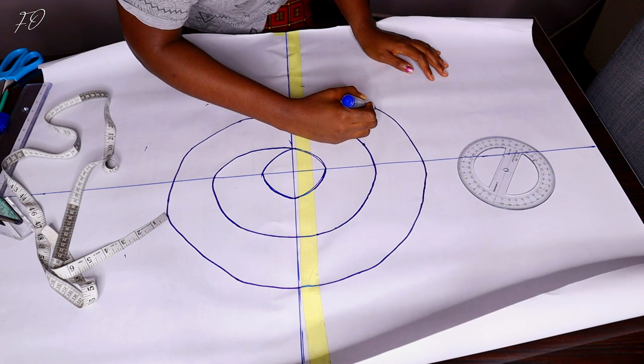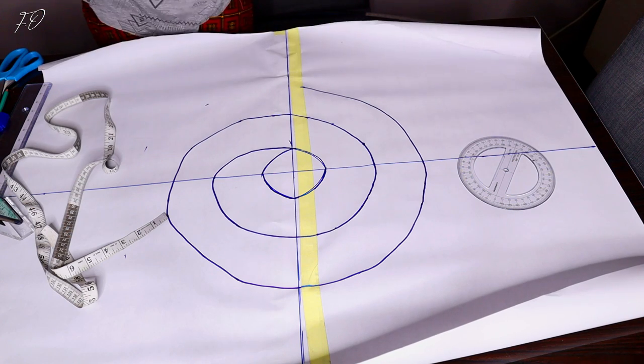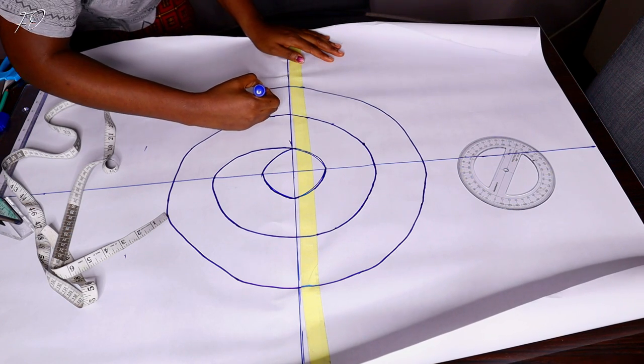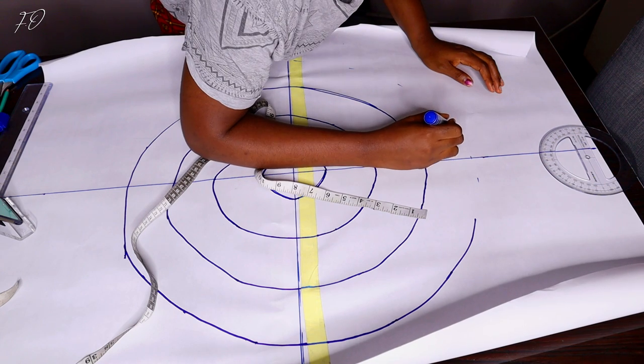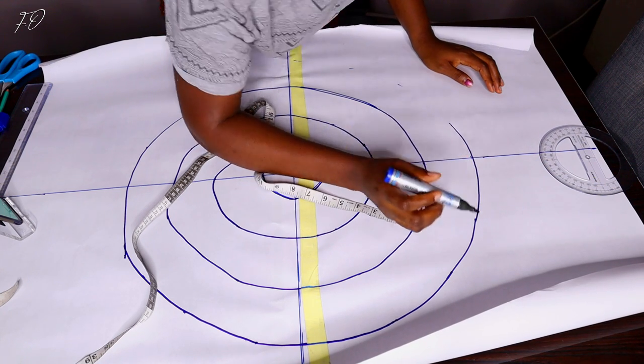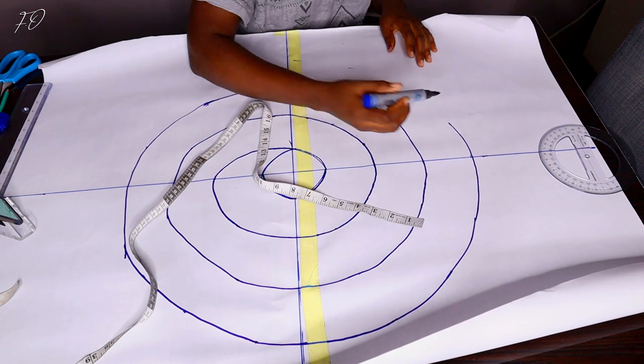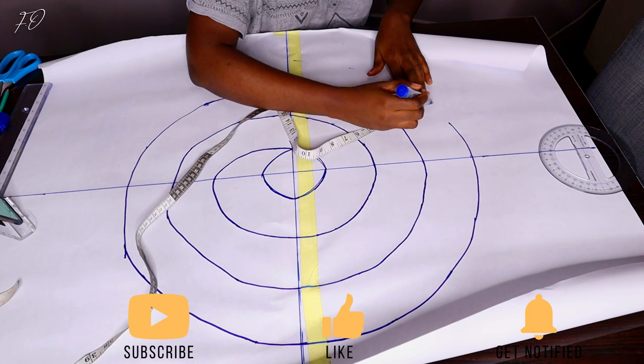So all I'm doing now is just going around, marking three inches and connecting the dots together. And when there's no longer space to connect, you know that you're out of space for your flounce and it's time to basically cut your flounce on whatever piece of fabric you want to cut it on.